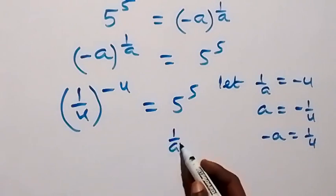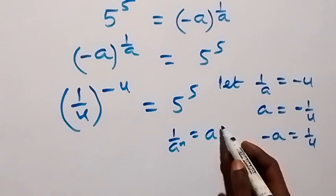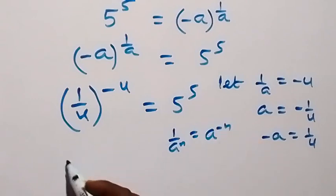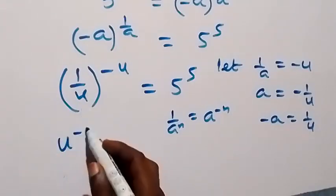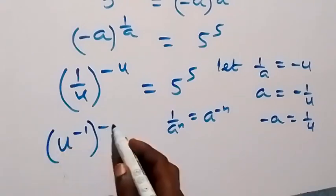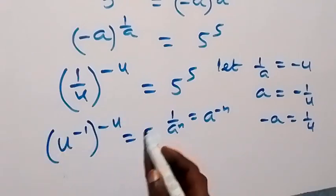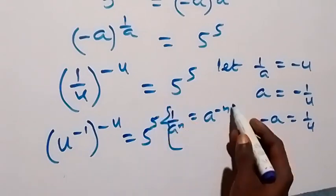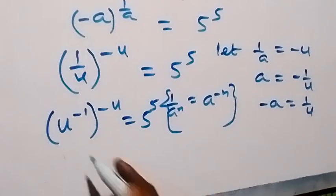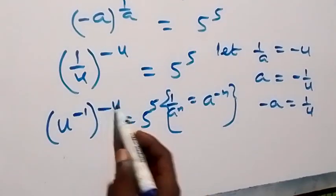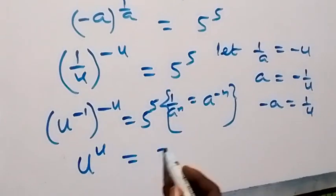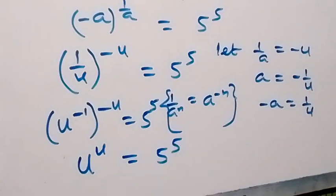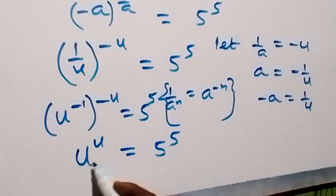From when we have 1 over a raised to power n, it's also equals to a raised to power minus n. So it implies we can write this as u raised to power minus 1, then raised to power minus u, equals to 5 raised to power 5. We can multiply the powers: minus times minus becomes plus. So this gives us u raised to power u equals to 5 raised to power 5. Therefore, u equals to 5.